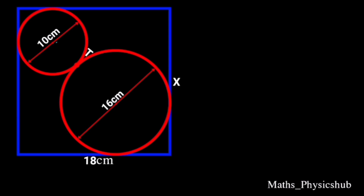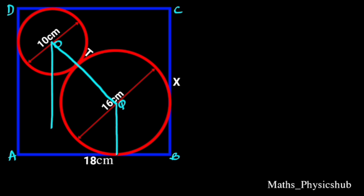First, let's call the centers of the two circles O and Q, and the vertices of the rectangle A, B, C, and D. Next we draw a straight line from point O to point Q. Going further, we draw perpendicular lines from point O and Q to touch the base of the rectangle. Let's call these points of intersection E and F. Let's also draw perpendicular lines from point O and Q to touch the side of the rectangle. Let's call these points of intersection H, I, and G.